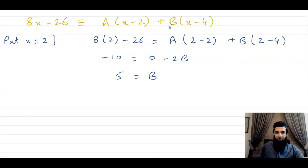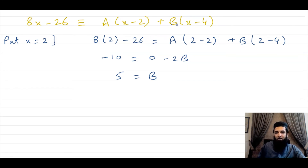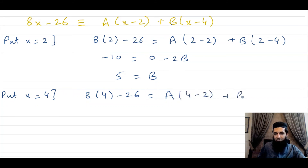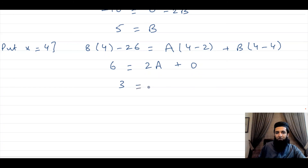For the value of A, we put x equal to 4. This makes (x minus 4) equal to 0, eliminating B. On the left-hand side we have 8 times 4 minus 26, which is 32 minus 26, equal to 6. On the right-hand side we have A times (4 minus 2) plus B times 0, which is 2A. So A comes out to be 3.